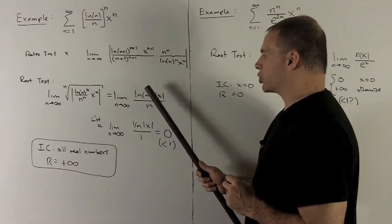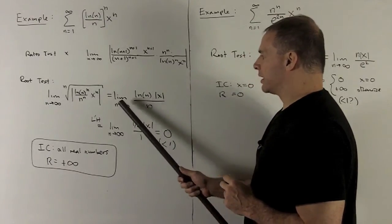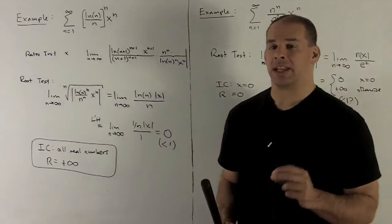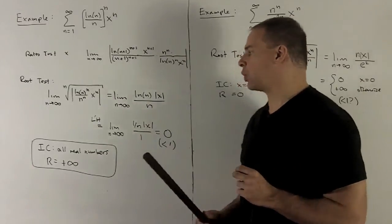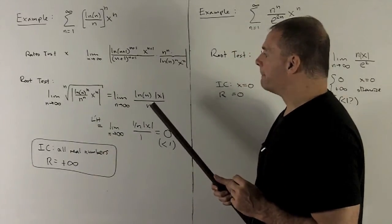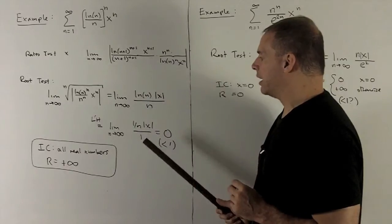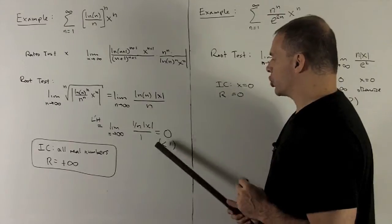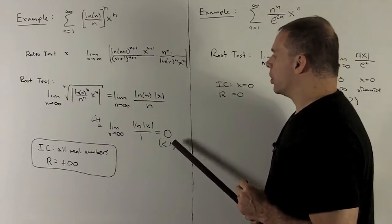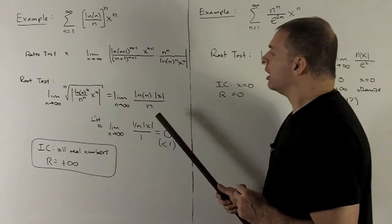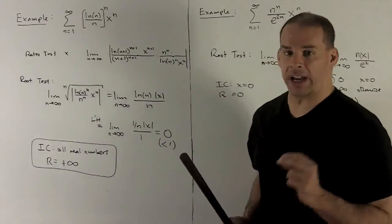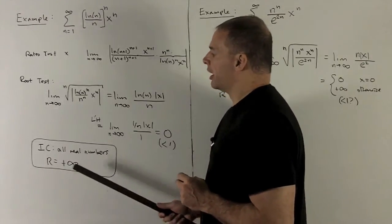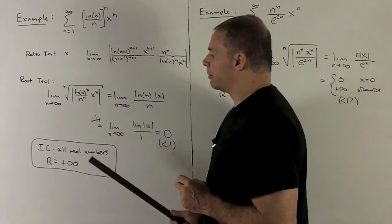We're really looking at the limit of natural log of n over n as n goes to infinity. That gives us an infinity over infinity — an indeterminate form — which means I can apply L'Hôpital's rule. Taking the derivative of the top and derivative of the bottom gives us 1/n over 1, and as n goes to infinity, that goes to 0, which is strictly less than 1. Since our x didn't matter here, our series converges for any x you choose. Our interval of convergence is all real numbers, and our radius of convergence is plus infinity.